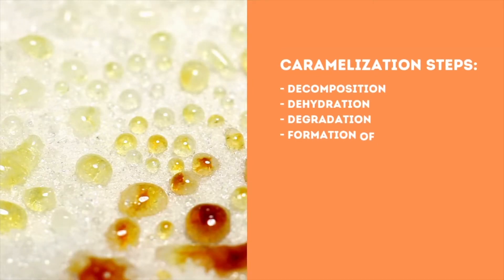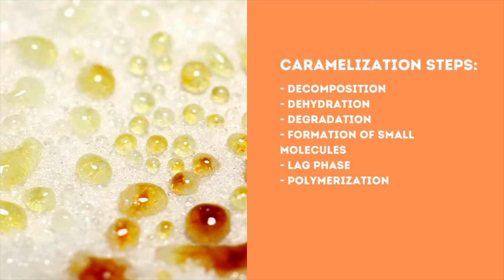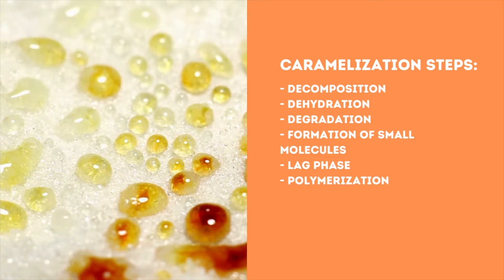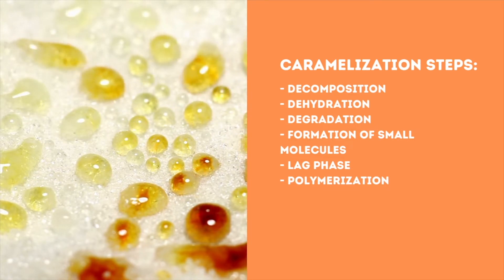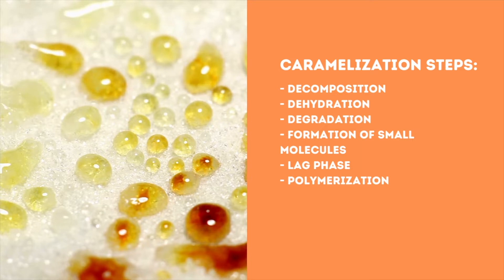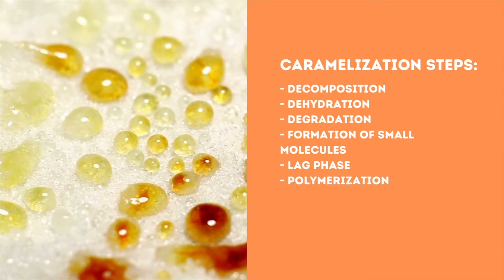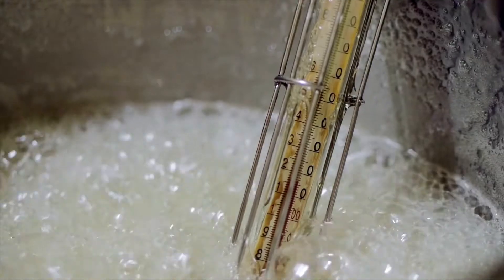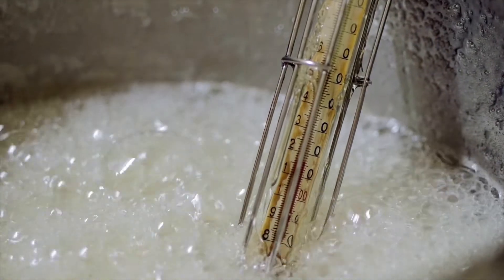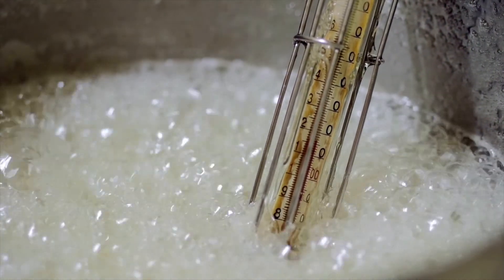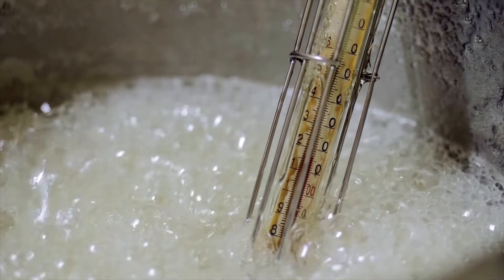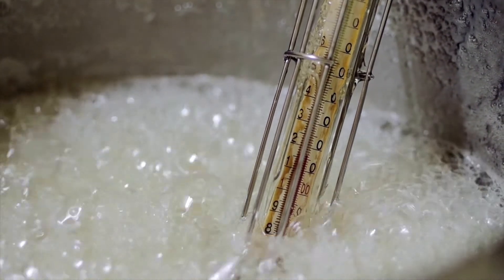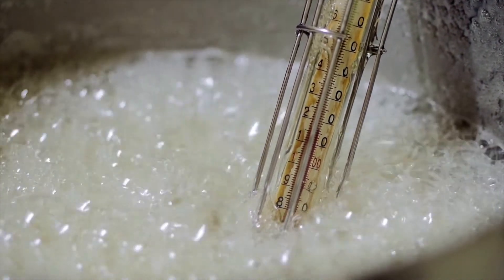The mechanism of caramelization development involves many steps, starting with carbohydrate reducing mono- and disaccharide decomposition, dehydration, and degradation, followed by the formation of small molecules, a lag phase, and eventual condensation or polymerization to form complex molecules of varying molecular weights. The exact type of products formed depends on sugar chemistry as well as process conditions such as temperature, pH, and water activity.